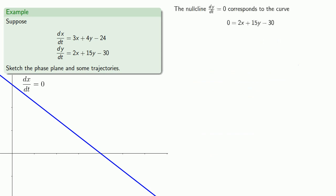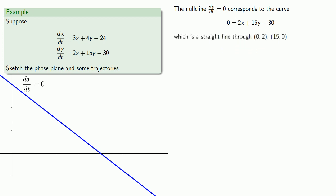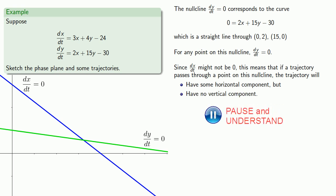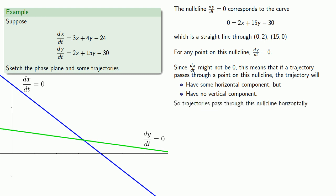The null cline dy/dt equals zero corresponds to the curve 0 = 2x + 15y − 30, which is a straight line through (0, 2) and (15, 0). For any point on this null cline, dy/dt is equal to zero. Since dx/dt might not be zero, if a trajectory passes through a point on this null cline, the trajectory will have some horizontal component but no vertical component. So trajectories pass through this null cline horizontally. Since we don't know dx/dt, we can't commit to the direction of the trajectories, so we'll wait until we have more information.